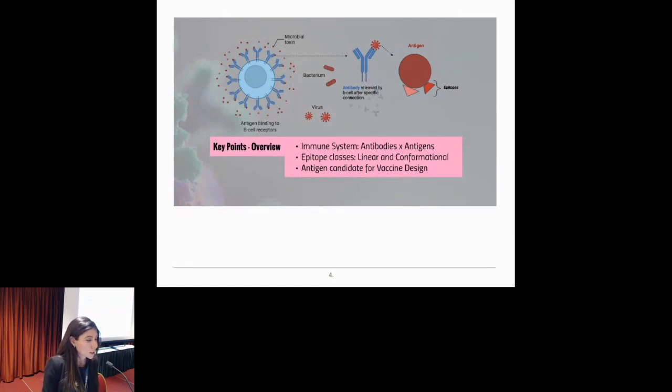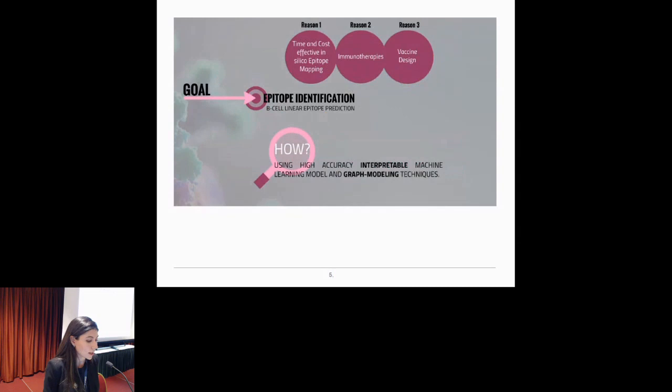And the relationship between this topic and vaccine design, which is our major application, is that the fundamental basis of vaccines is to create long-term protection immunity in the population. And that's how we can lead to our goal, that is to predict linear B-cell Epitopes with three main reasons. The first one is to reduce time and also the cost of mapping Epitopes, since the experimental methods which map and identify Epitopes are extremely laborious and expensive.